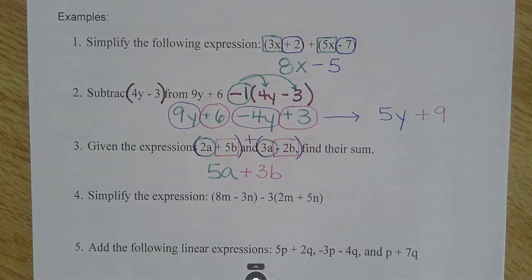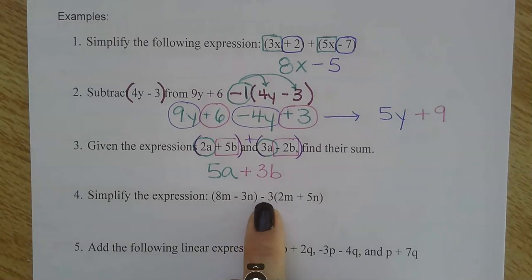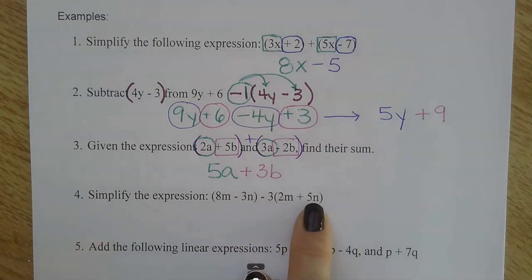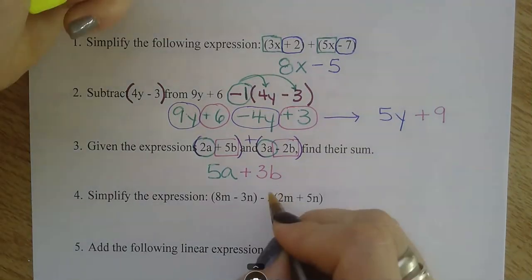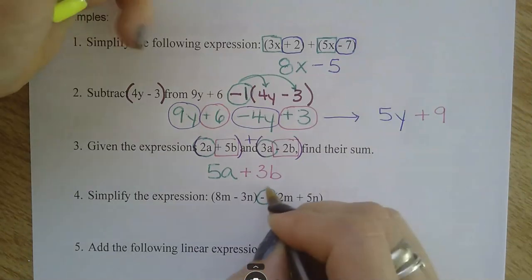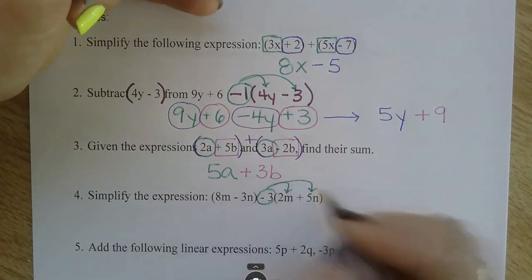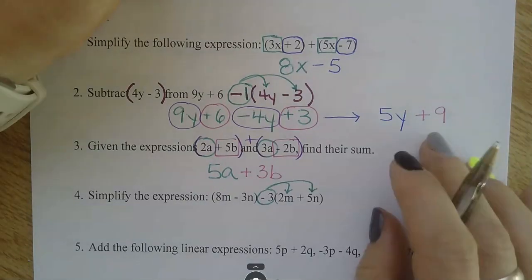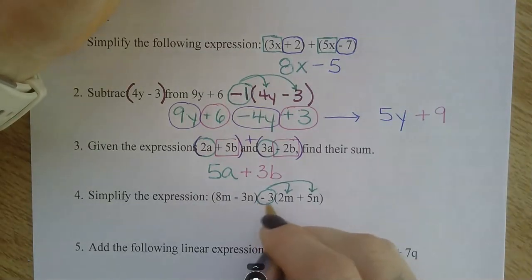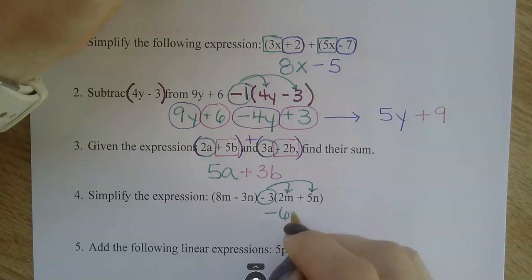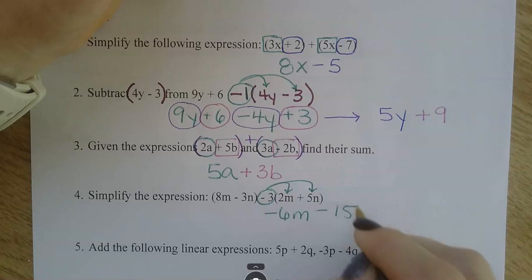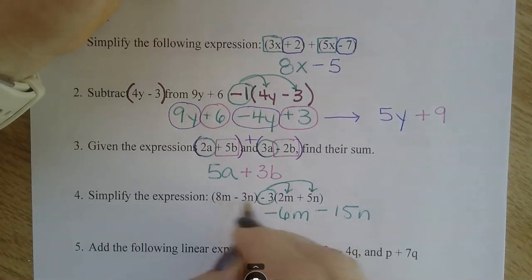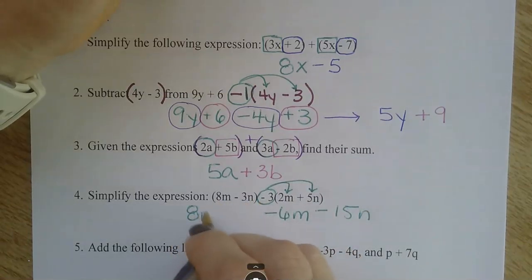Simplify the expression: 8m minus 3n, minus 3 outside this set of parentheses. So I do have something to distribute. I'm going to make sure I see this negative 3 and distribute it to both things inside the parentheses, and rewrite that first. So negative 3 times 2m. Negative 3 times 5n is negative 15n. And I bring everything else down that was already in the problem.